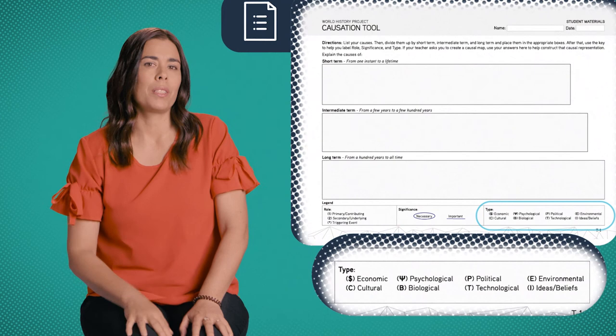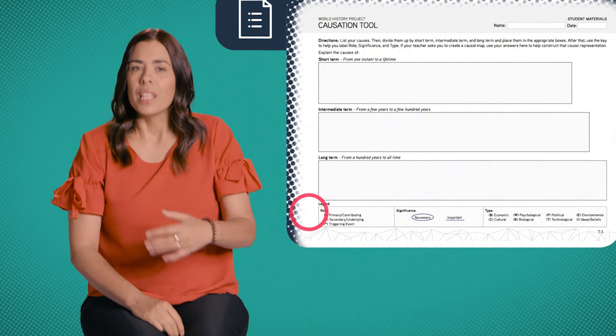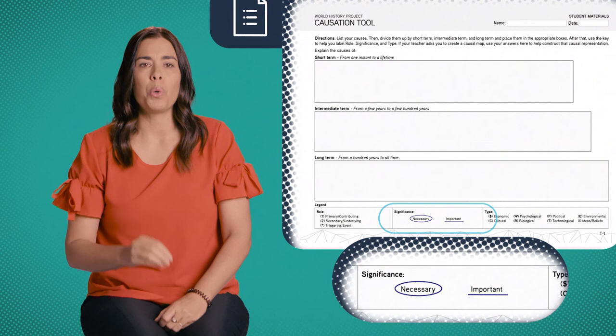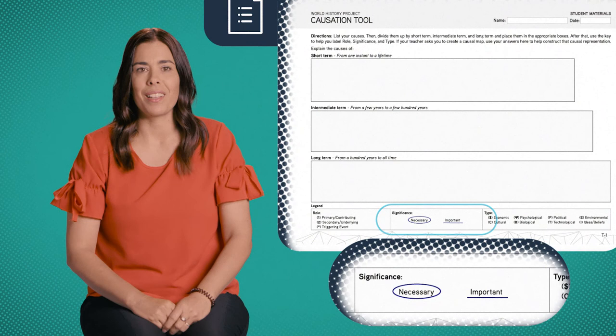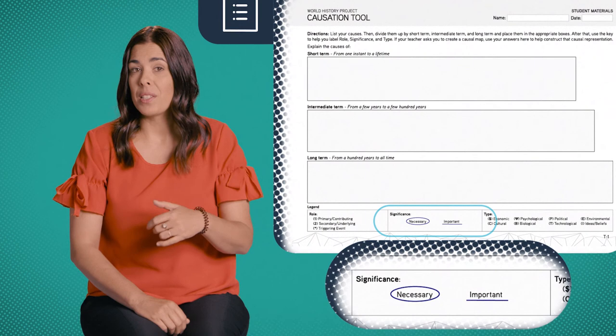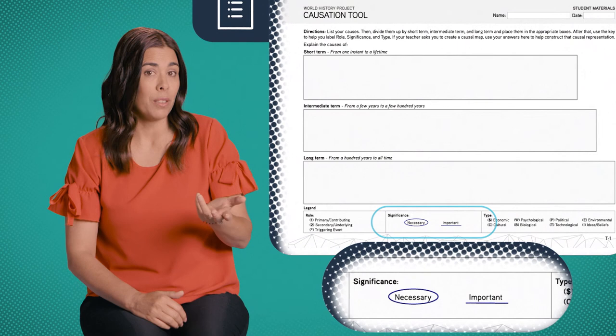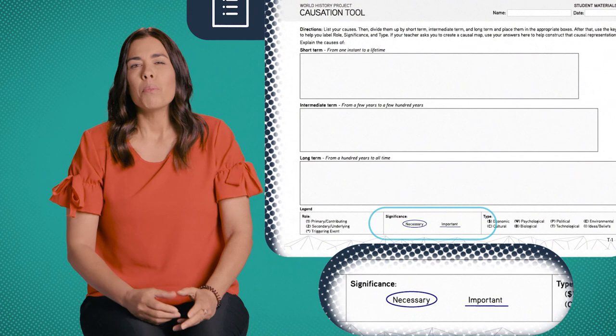We have one last category: significance. This has us asking, of all these causes we found, which are the most important in generating change? This one always creates great debates in class. We teachers love to explain things, but in a debate like this, students will make a variety of competing claims. That debate will show students why claims need evidence — and be a lot more meaningful to them than any lecture. Once students have filled out and labeled their causes, they have one last task: create a causal map that shows causes, consequences, and how they all relate. This is where causation really comes alive for students.